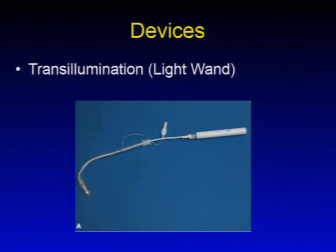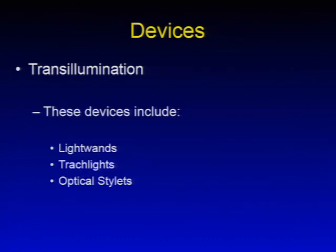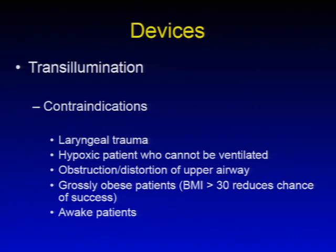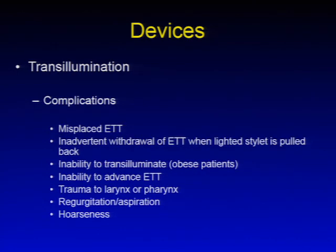Next, transillumination devices such as the light wand. Other devices in this category include trachlight and optical stylets. Indications include difficult laryngoscopy, copious secretions or blood, routine intubation, and patients with potential or known cervical spine injury. Contraindications include laryngeal trauma, hypoxic patient who cannot be ventilated, obstruction or distortion of the upper airway, and grossly obese patients — typically BMI greater than 30 — which reduces success. Complications include misplaced or inadvertent withdrawal of the endotracheal tube, inability to transilluminate especially in obese patients, inability to advance the tube, possible laryngeal or pharyngeal trauma, regurgitation, aspiration, and hoarseness.